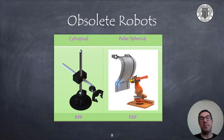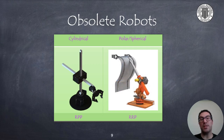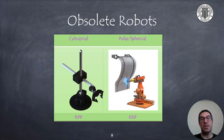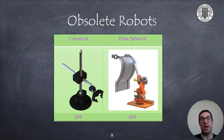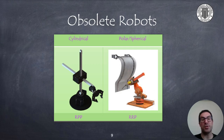Some additional obsolete open kinematic chain robot structures can be found too. This is the case of the cylindrical and spherical robots. This type of robots combine revolute and prismatic joints as you can see from the sequence of letters below the pictures.